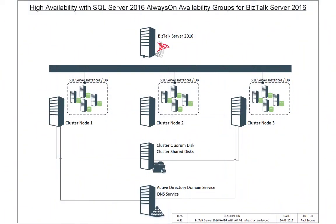Let's have a closer look at the infrastructure layout for the given scenario. Here is the big picture that summarizes the server landscape. From the bottom to the top you can see the Active Directory Service domain server with DNS, the cluster shared disks with the Quorum disks, the layer with the SQL Server cluster nodes — each node has several instances installed for the BizTalk databases — and the BizTalk Server itself.